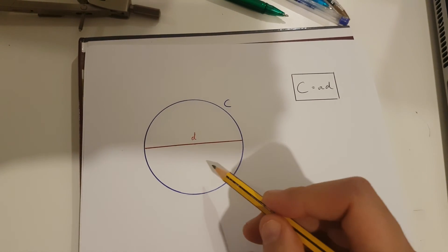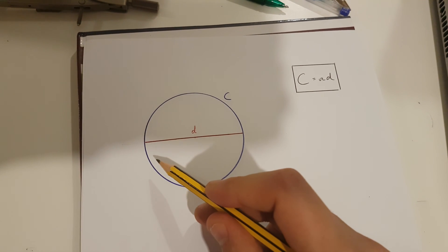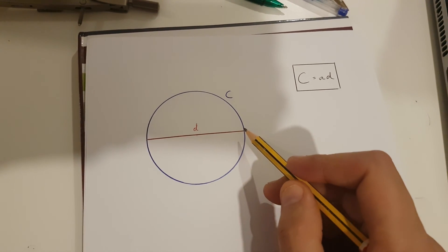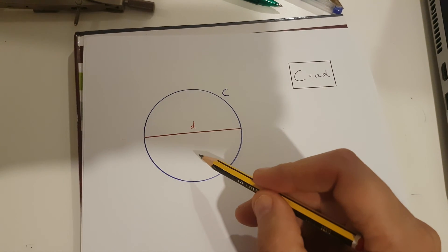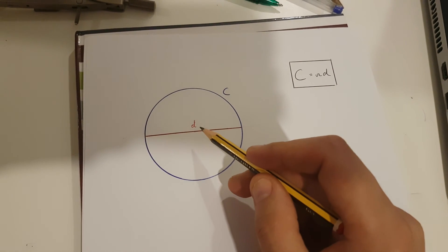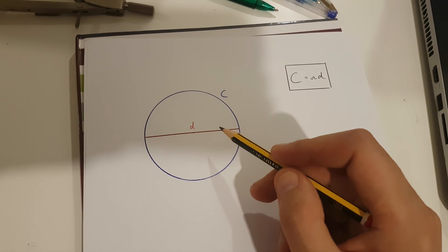Well, first of all, we have this circle over here. It has a diameter, and it also has a circumference. The larger this diameter becomes, the larger the circumference becomes.